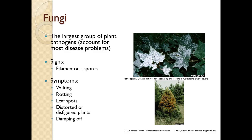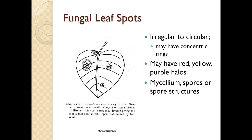Fungi are the largest group of plant pathogens, and most disease problems will be fungal. Signs include filamentous structures such as mycelium and hyphae, or spores. Symptoms can include wilting, rotting, leaf spots, damping off, and distorted or disfigured plants. Leaf spots are irregular to circular, may have concentric rings like bullseyes, and may have red, yellow, or purple halos, with visible mycelium, spores, or spore structures.